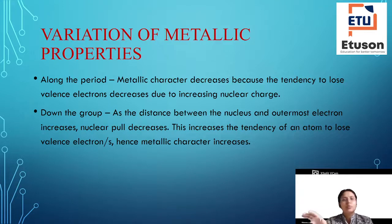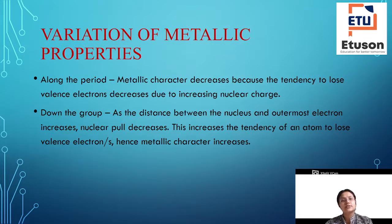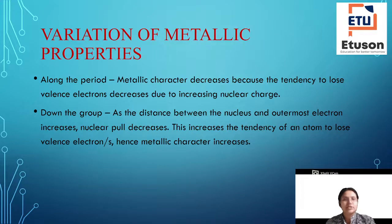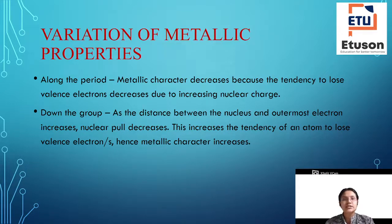Variation of metallic properties. Along the period, metallic character decreases, because the tendency to lose valence electrons decreases due to increasing nuclear charge. As we go along the period, the metallic character will be reduced because the nuclear charge has increased and electrons are held more tightly.